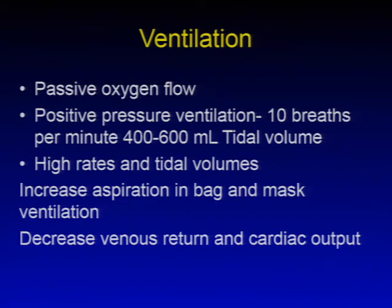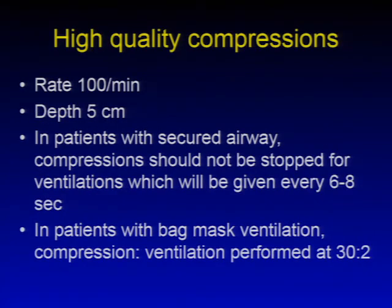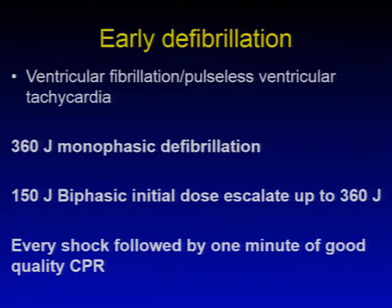Ventilation can use passive oxygen flow or positive pressure ventilation. Positive pressure ventilation is given at 10 breaths per minute with 400–600 ml tidal volume. High rates and large tidal volumes increase aspiration risk with bag-mask ventilation, decrease venous return, and decrease cardiac output. High-quality compressions should be at a rate of 100 per minute and depth of 5 cm. In patients with a secure airway, compressions should not be stopped for ventilation (given every 6–8 seconds); with bag-mask ventilation, the compression-to-ventilation ratio is 30:2.